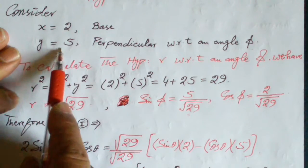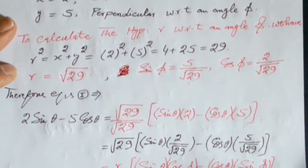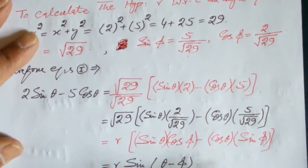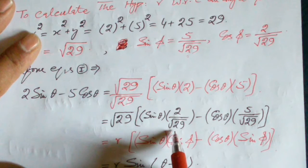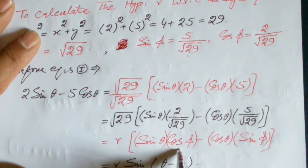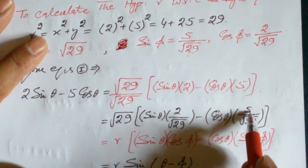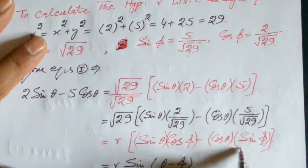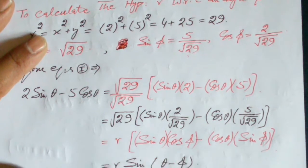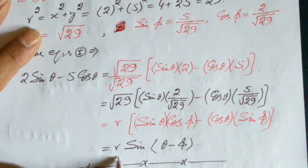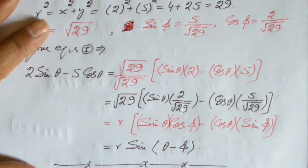2 is the base and 5 is the perpendicular, so 2/√29 = cos(φ) and 5/√29 = sin(φ). Rearranging the given equation gives the final result: r·sin(θ - φ) where r = √29.